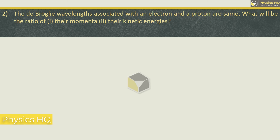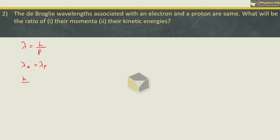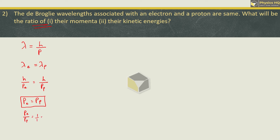The next sum: the de Broglie wavelengths associated with an electron and a proton are the same. What will be the ratio of their momenta and their kinetic energies? The wavelength formula is h by momentum. Since wavelength of electron equals wavelength of proton, we can write h upon momentum of electron equals h upon momentum of proton. H cancels and we get momentum of electron equals momentum of proton. So the ratio Pe to Pp is 1:1.